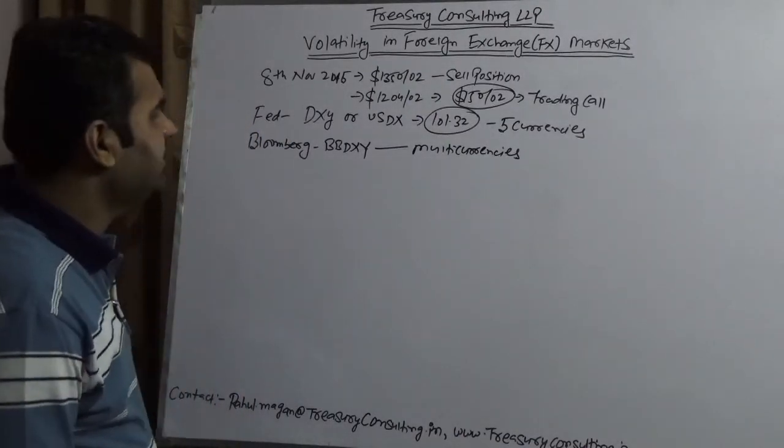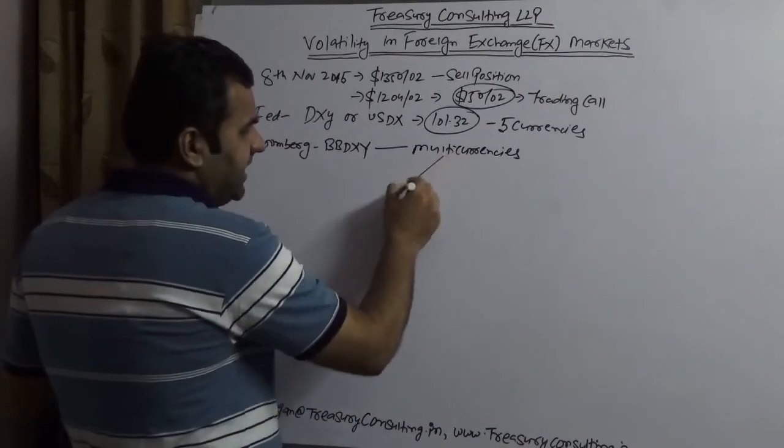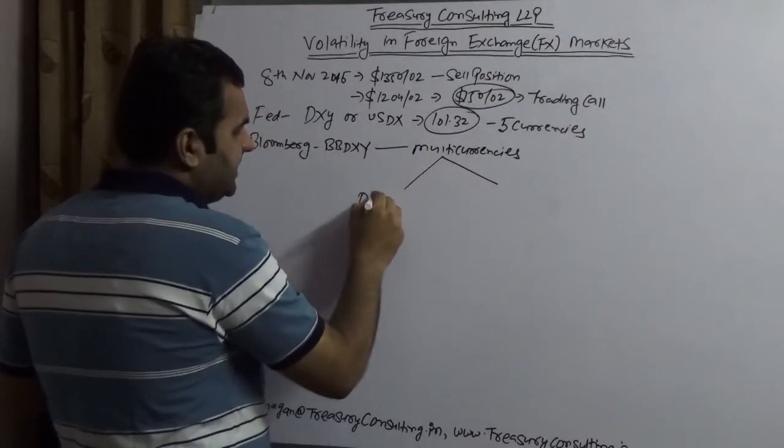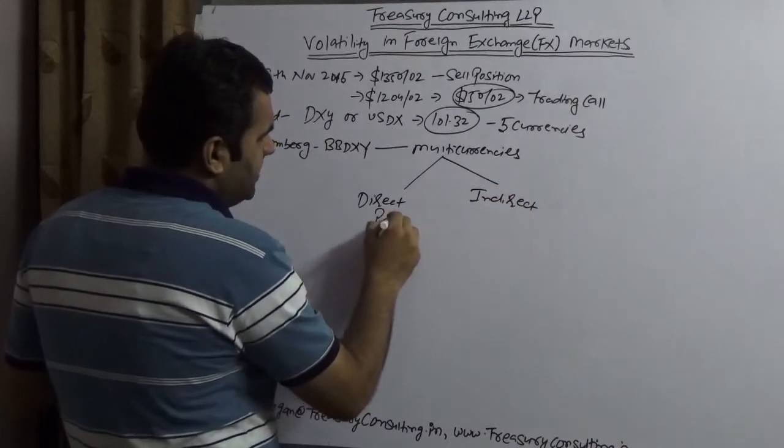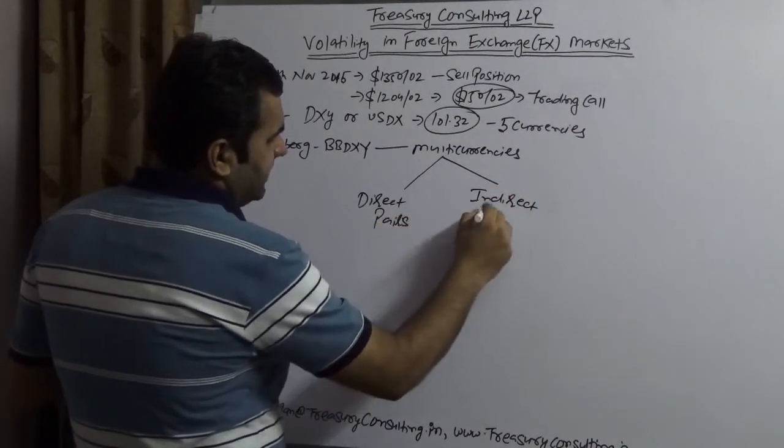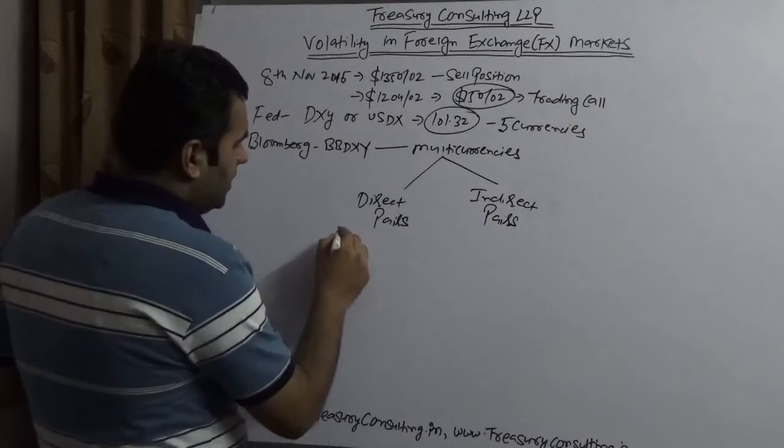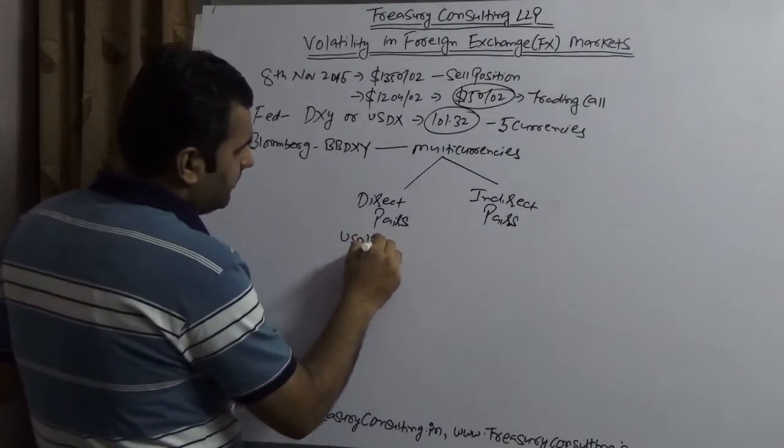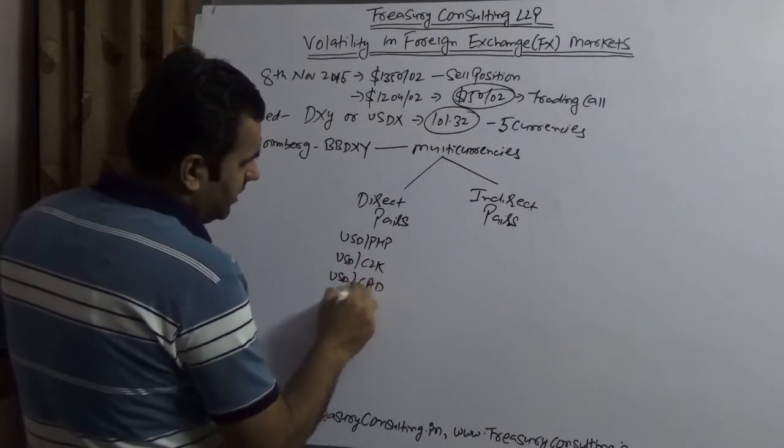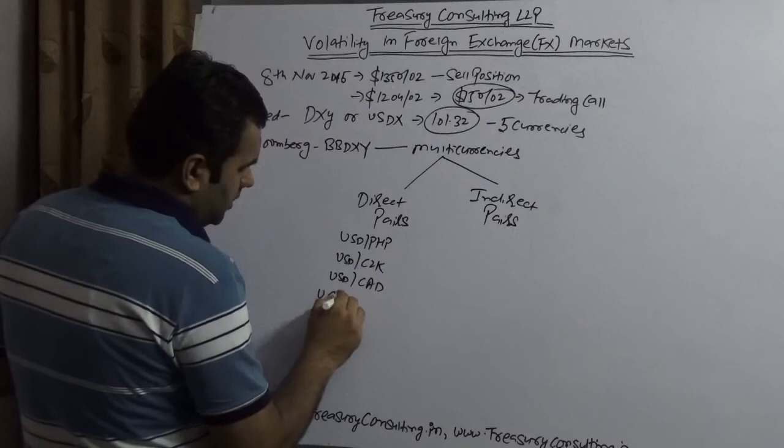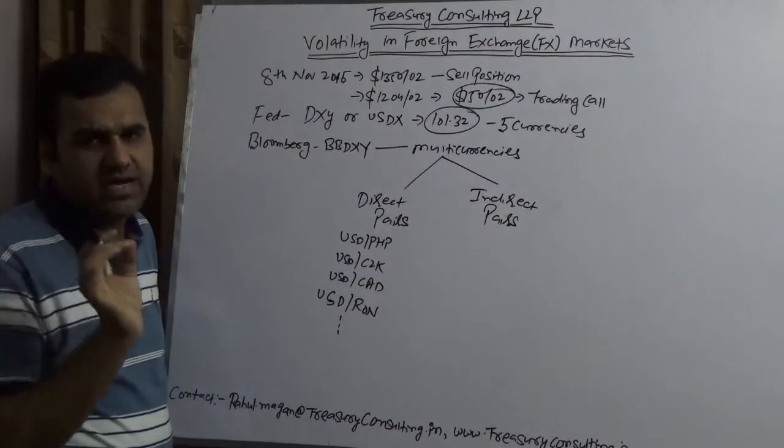Another thing which we seriously need to consider post-Trump is directs and indirects. I know that directs and indirects have different definitions, but I am going to use different definitions. Direct pairs and indirect pairs. I am referring to direct pairs where dollar is a base currency like dollar to Philippines Piso, dollar to Czech Crown, dollar to CAD, dollar to Romanian RON and many.